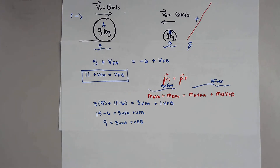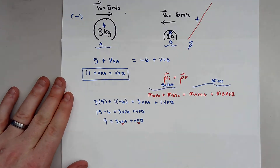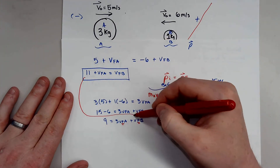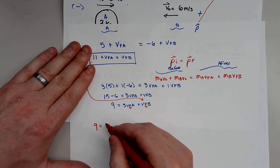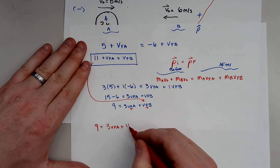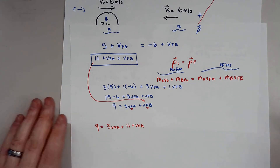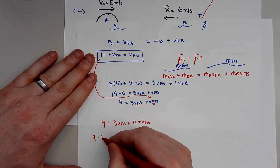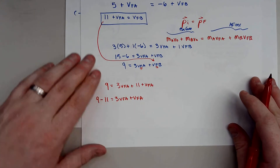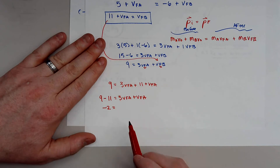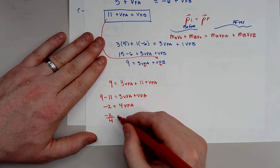Now we still have two unknowns, but we already solved for VFB from the shortcut equation. So I'm going to take VFB = 11 + VFA and plug it in. This gives: 9 equals 3VFA plus (11 plus VFA). So 9 minus 11 equals 3VFA plus VFA, which means negative 2 equals 4VFA.